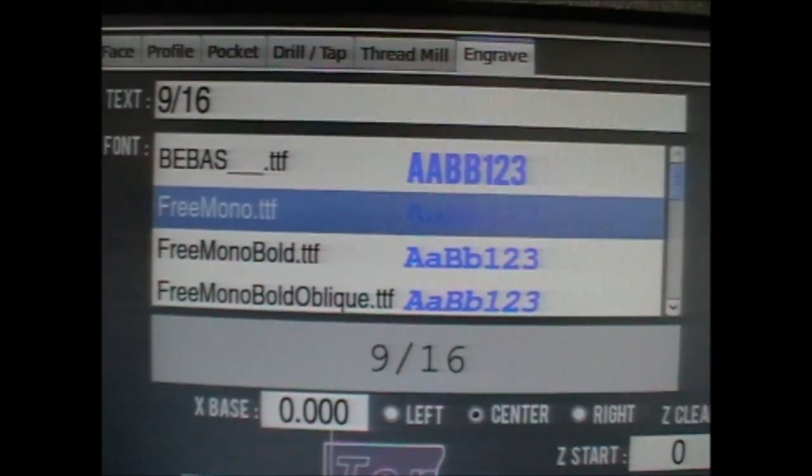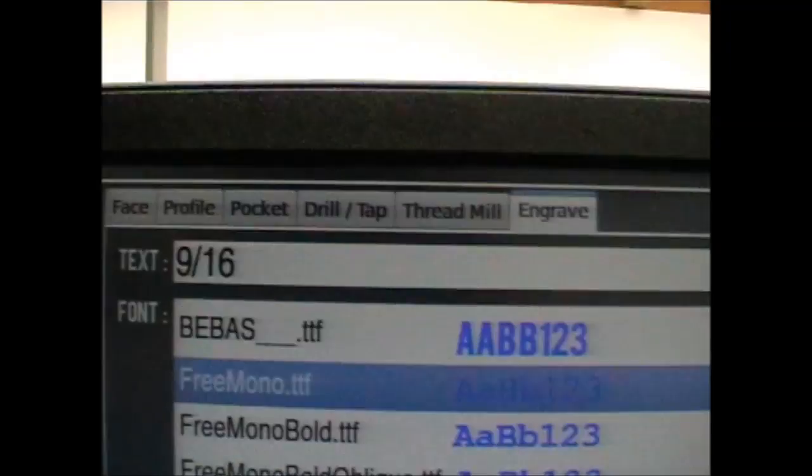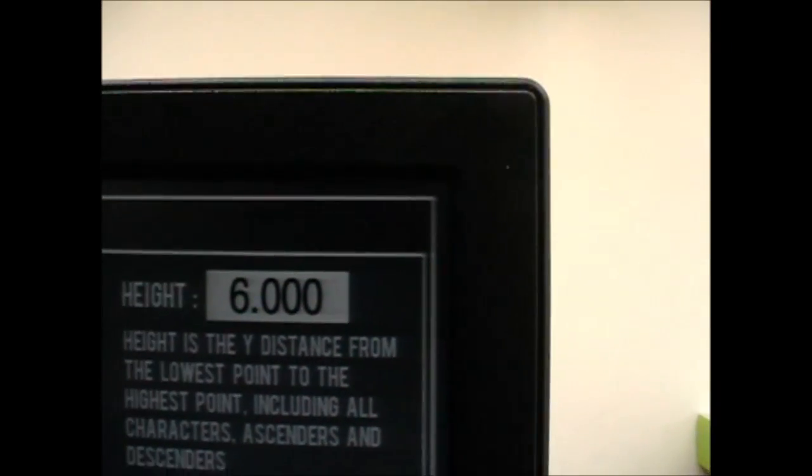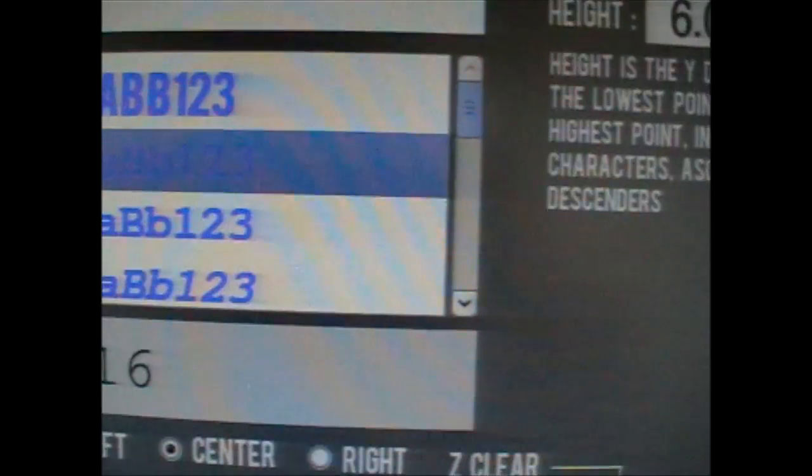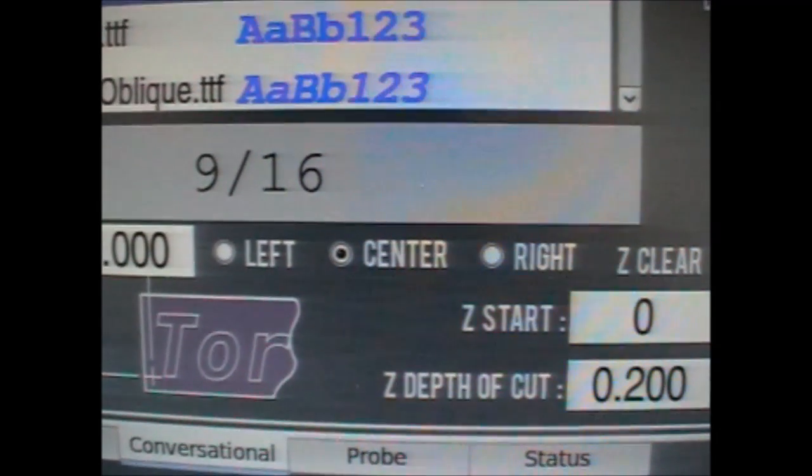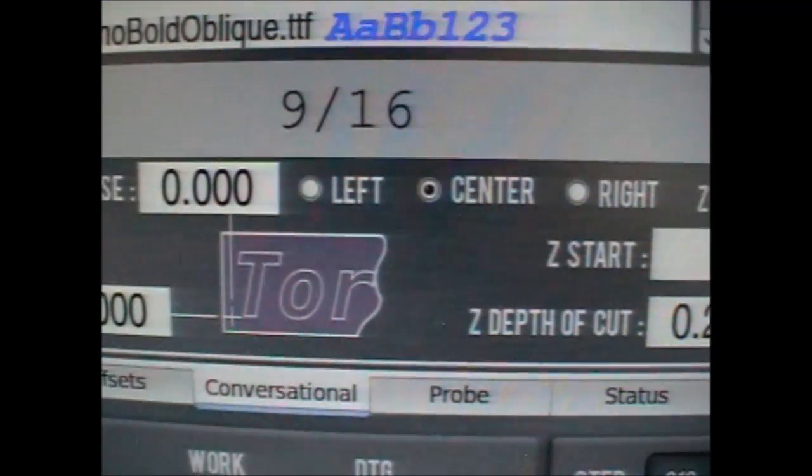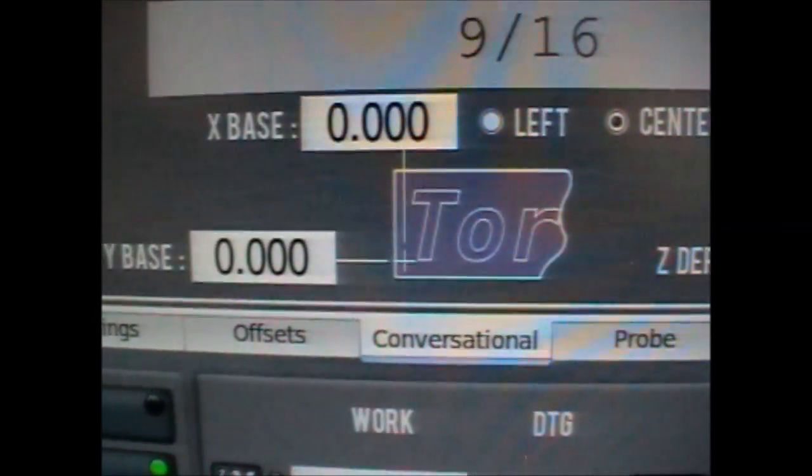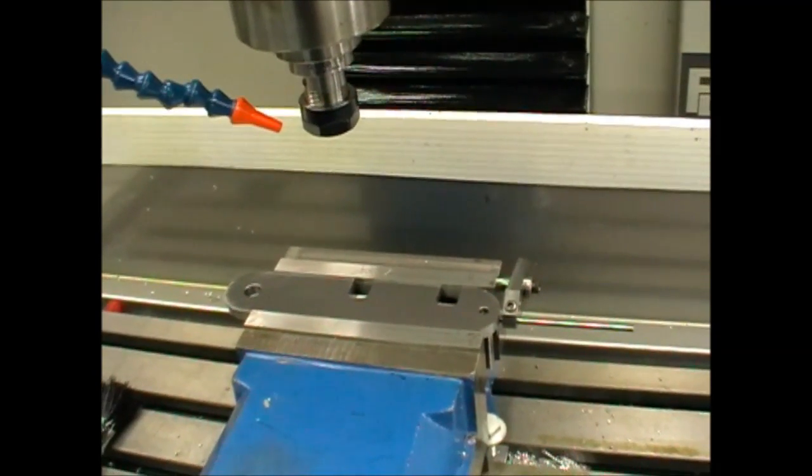For the data entry I've gone for the Free Mono which seems about the narrowest of the different fonts. We've entered in our 9/16, the font size is set as a height 6 millimeters from top to bottom, that's the overall height. We've selected the positioning or the orientating of the text as center so that's the Y axis drawn in the middle of the text and we've set the baseline as zero.